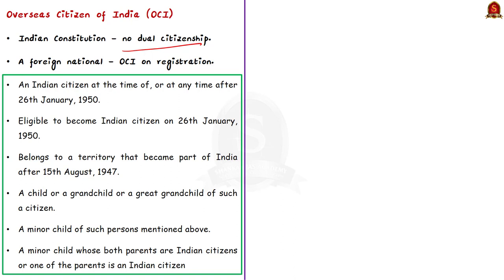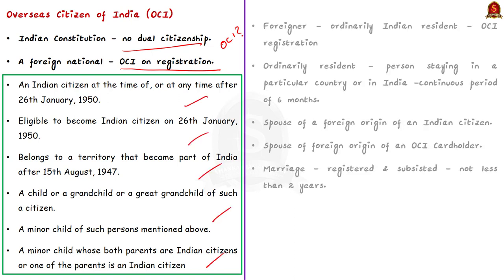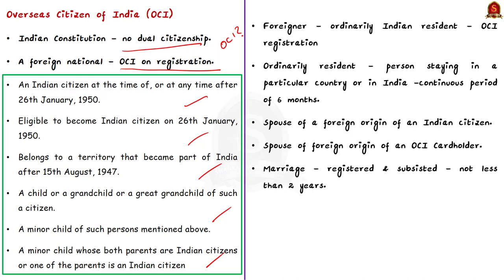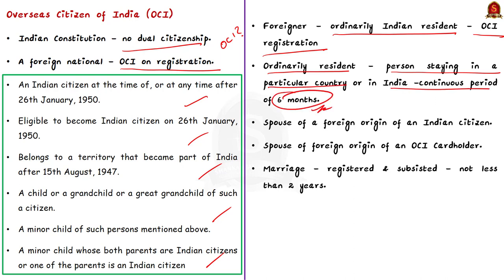A foreign national who falls under any of these categories shall be considered as an Overseas Citizen of India on registration. Note that the foreigner has to be an ordinarily Indian resident to be eligible to apply for OCI registration in India. Here, 'ordinarily resident' means a person staying in a particular country continuously for a period of six months.